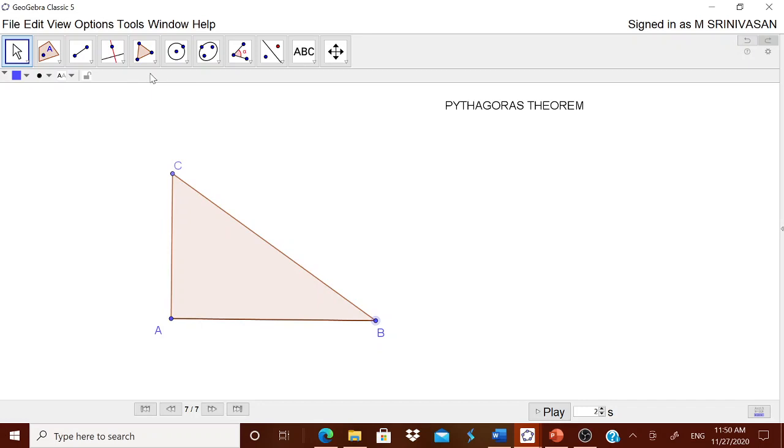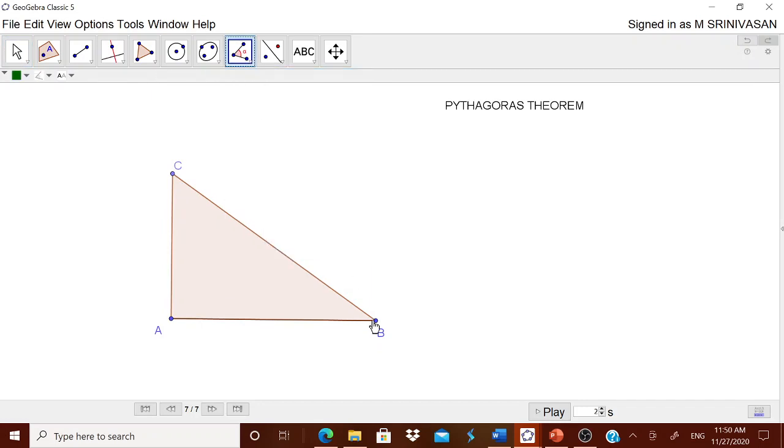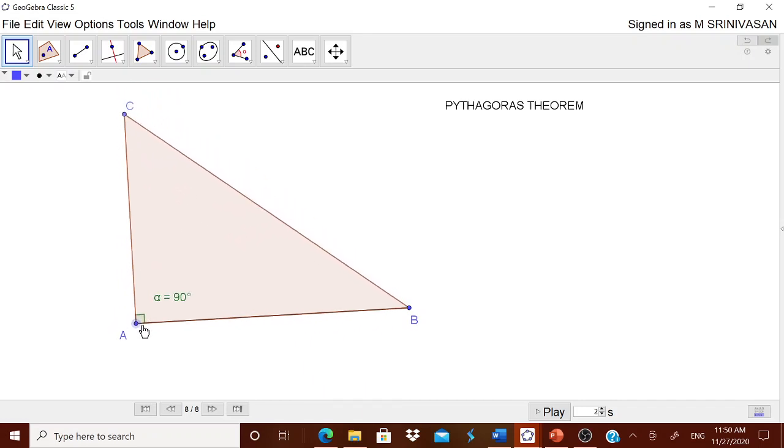Let me check out whether that 90 degrees is not altered. Go for this angle. Go in clockwise direction. B, A and C. It is always showing 90 degrees. Now you pull and push, then pull and push, again pull and push, and check whether that 90 degrees is not at all altered. Therefore, we got a perfect right angle triangle.